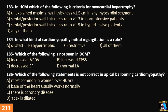Question 184: In what kind of cardiomyopathy is mitral regurgitation a rule — meaning seen in almost 100% of patients? A) dilated, B) hypertrophic, C) restrictive, or D) all of them? Question 185: Which one of the following is NOT seen in dilated cardiomyopathy? A) increased left ventricular end-diastolic volume, B) increased EPSS (E-point septal separation).